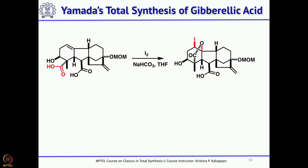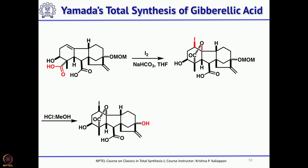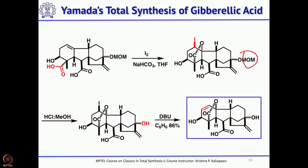Then do the iodolactonization once again to get the iodolactone, remove the MOM group with HCl, and then treat with DBU. DBU eliminates the iodide to get the double bond, and that is how Yamada completed the total synthesis of gibberellic acid.